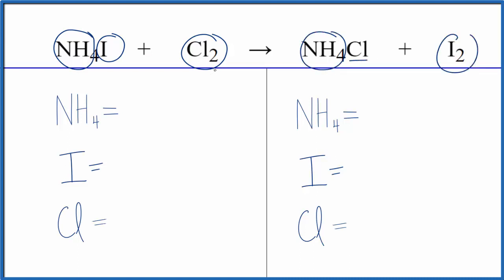So essentially what's happening here is the chlorine is replacing the iodine in this ammonium iodide compound. So we call this a single replacement or a single displacement reaction. The chlorine here is replacing the iodine.